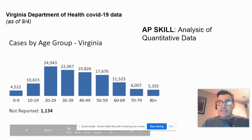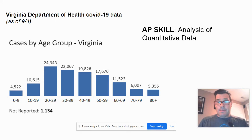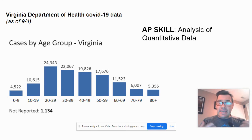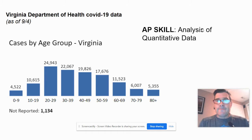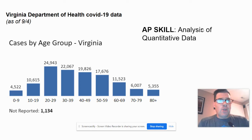One of the biggest skills you need in AP Government is the ability to analyze quantitative data. Quantitative data just means numbers, and there are a lot of numbers in politics, especially when talking about polls, money, and Congress spending. I want to go through one example with you, and then you'll have a chance to try it out and practice the skill, and I'll give you some feedback.